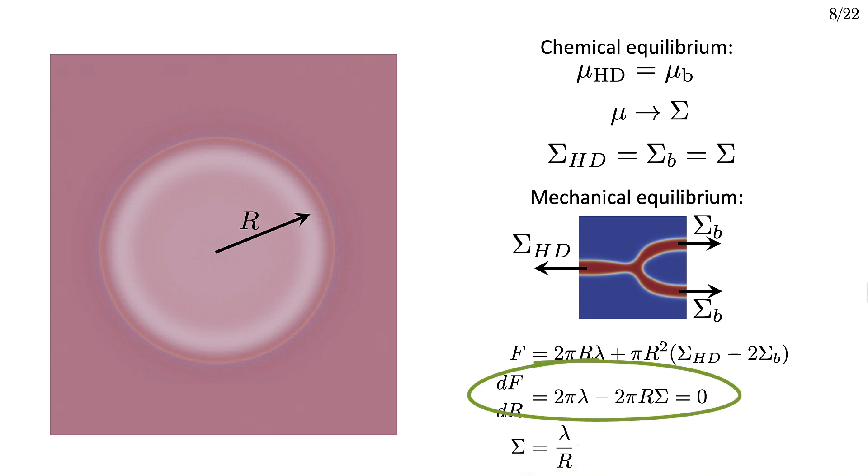We can differentiate this free energy to get the force on the threefold junction and set it to zero to see the force-free condition. This gives us a relationship between the membrane tension, line tension, and the radius of the hemifusion diaphragm.